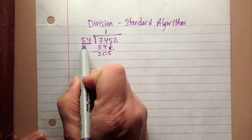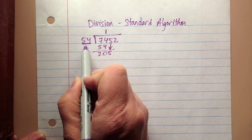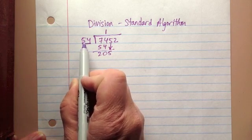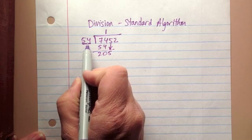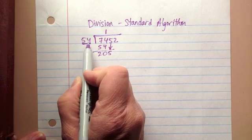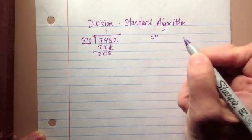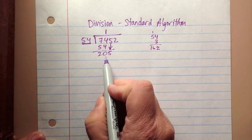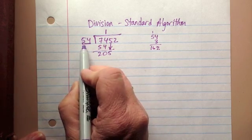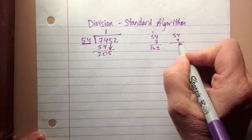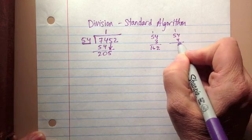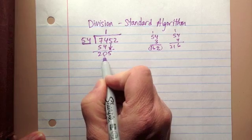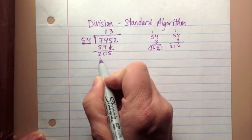205 is now what I'm going to look at. How many groups of 54 can I find in 205? If I estimate — say this is 50 and this is 200 — I would say there's about 4 of these in 205. But because I know there's a little bit more than 50, I'm going to say there are 3 54's in 205. Let me double check: 54 times 3 — 3 times 4 is 12, 3 times 5 is 15, plus 1 is 16 — equals 162.